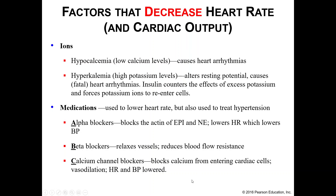Ions — specifically calcium and potassium — also affect heart rate. Hypocalcemia (low calcium) and hyperkalemia (high potassium) both decrease heart rate. Insulin specifically captures the effects of excess potassium by forcing potassium to re-enter cells, allowing new action potentials to start.